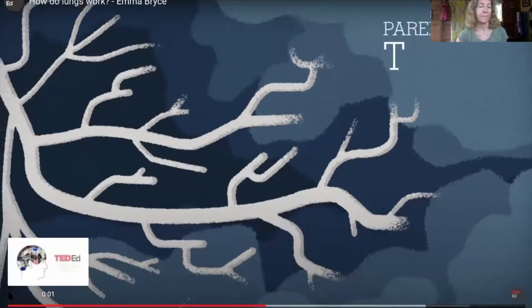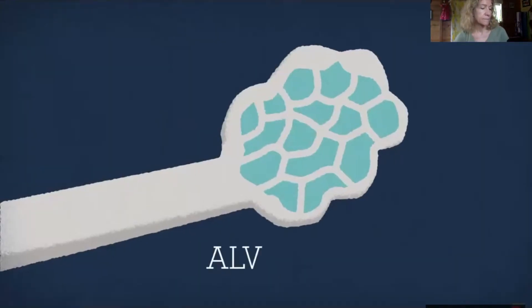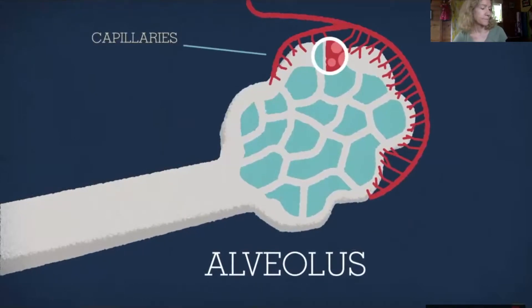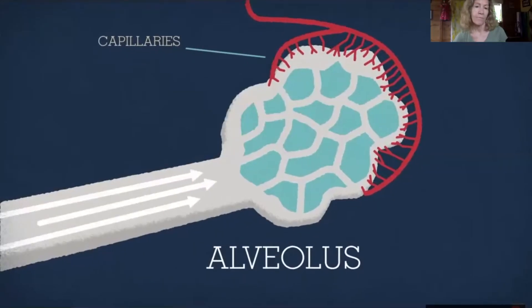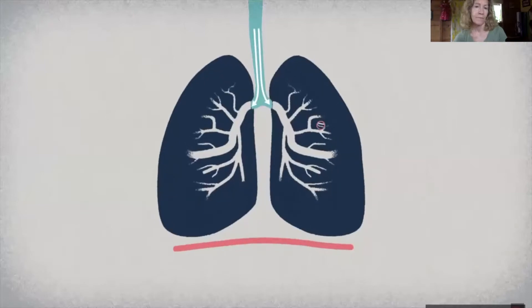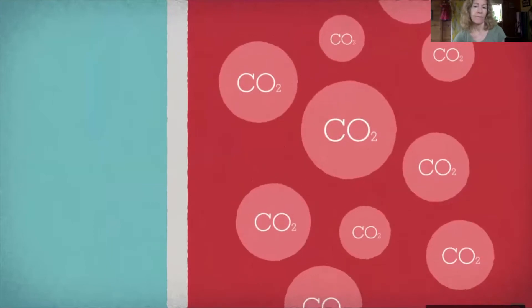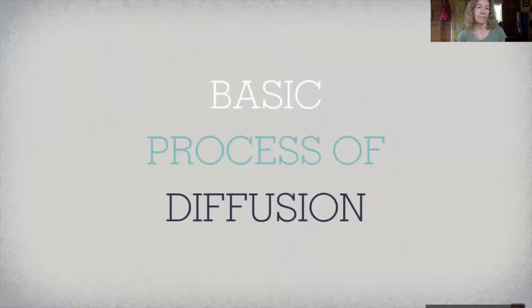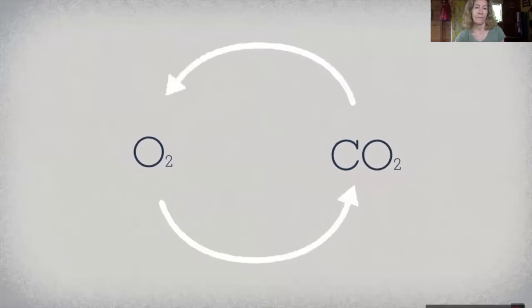At the end of each bronchiole is a little air sac called an alveolus, wrapped in capillaries full of red blood cells containing special proteins called hemoglobin. The air you've breathed in fills these sacs, causing the lungs to inflate. Here is where the vital exchange occurs — the capillaries are packed with carbon dioxide and the air sacs are full of oxygen.